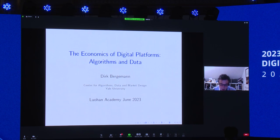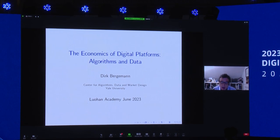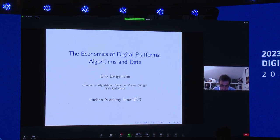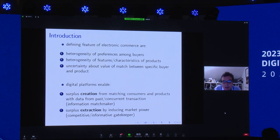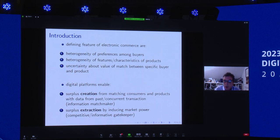I'm going to try to lead the presentation through some recent work on digital auctions and bidding algorithms, and hopefully conclude that the interaction between algorithm and data will be central for a long time. As defining features of digital or electronic commerce, we have an incredible heterogeneity in terms of diversity in preferences among buyers, matched with an equally large heterogeneity in the features and characteristics of products offered by sellers.